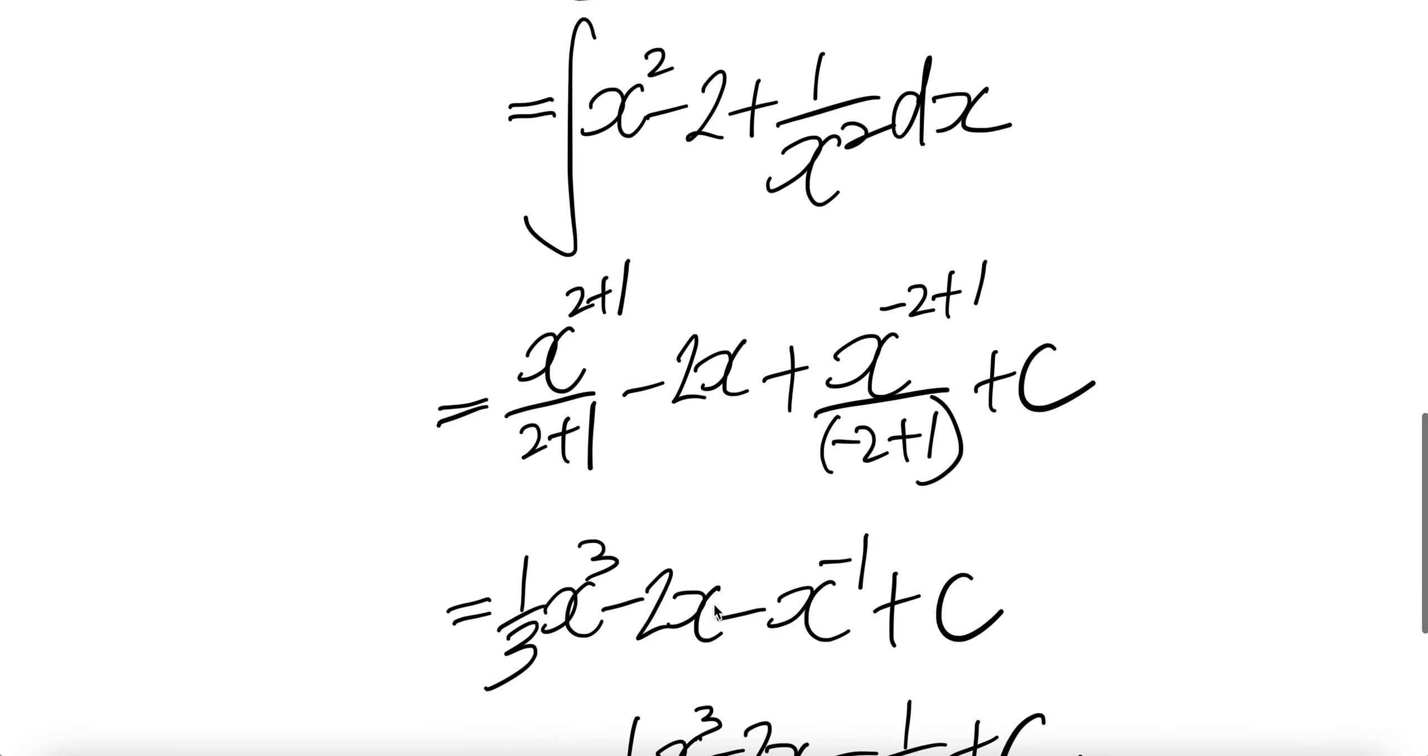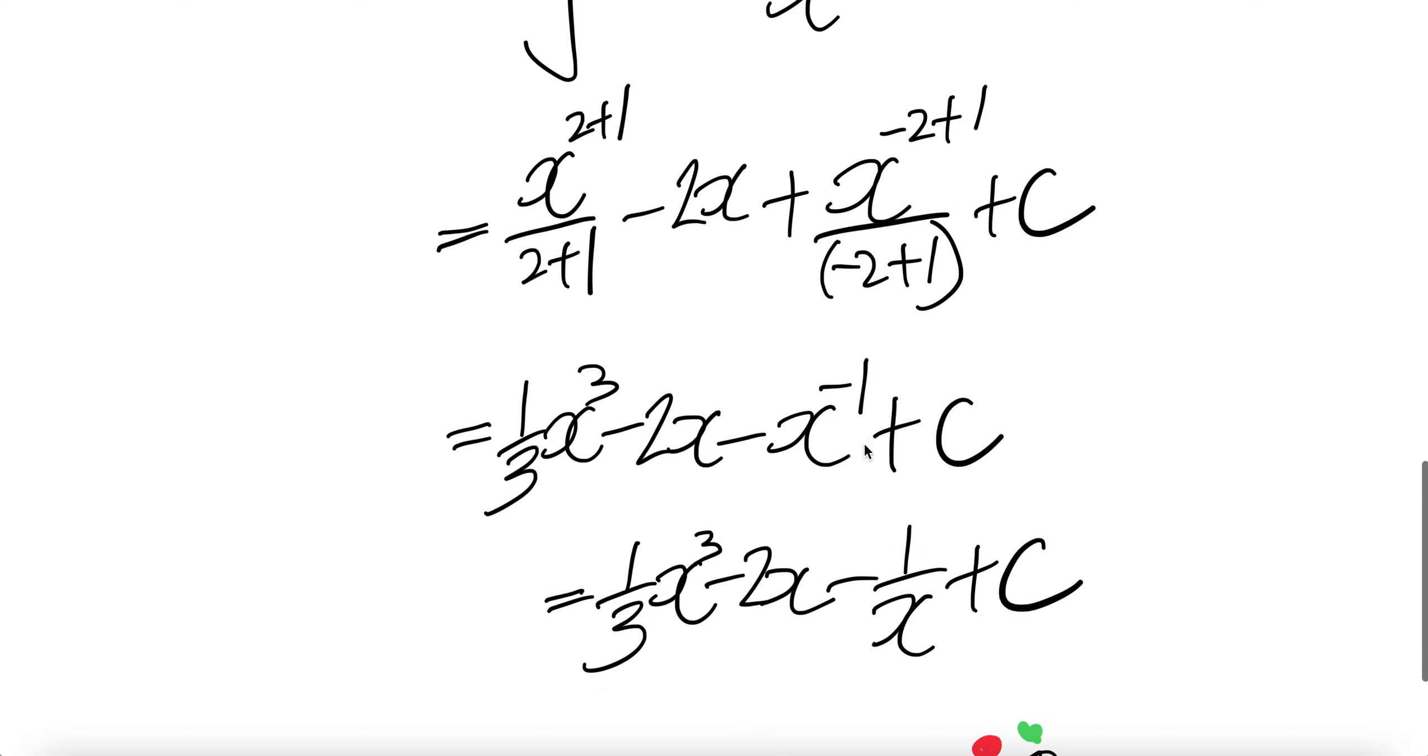2 plus 1 is 3 here, so x cubed over 3. Minus 2 plus 1 is negative 1 here. Negative divided by negative 1 gives x to the negative 1.